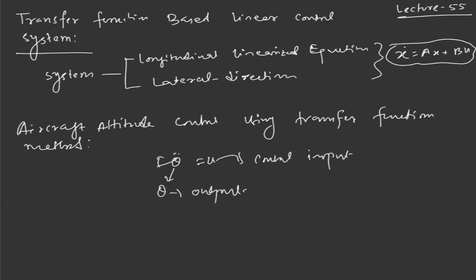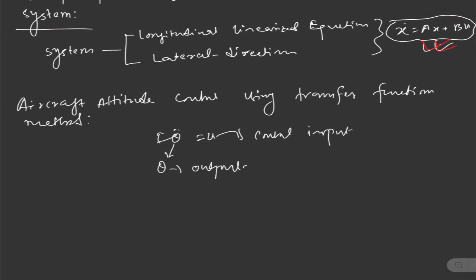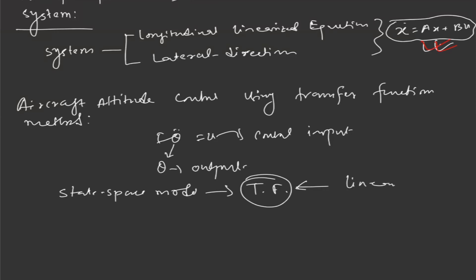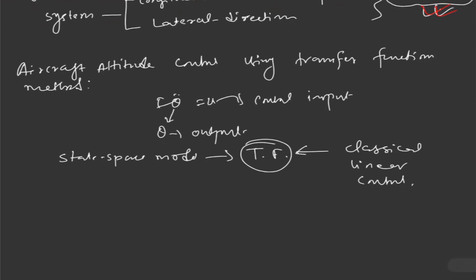The question is how we can convert systems which are basically multiple input and multiple output, or in state space form, to the transfer function form. Once the system is in transfer function form we can apply classical linear controls. So here the subject of study in this lecture is how we can come up with the transfer function for systems represented in state space form.